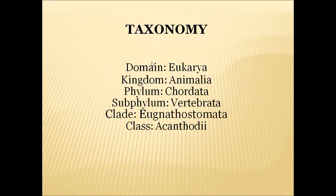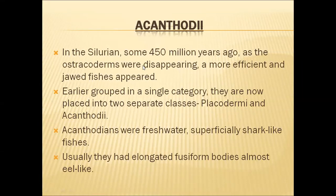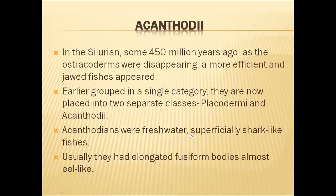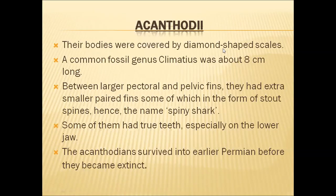The classification of Acanthodi places them within Gnathostomata. Acanthodians, like placodermians, came into existence around 450 million years ago as placoderms were disappearing. They were among the first jawed fishes. Earlier these first jawed fishes were treated as a single category, but now they are split into two groups: Placodermi and Acanthodi. These acanthodians were freshwater organisms that superficially resembled sharks and had elongated fusiform, almost eel-like bodies.